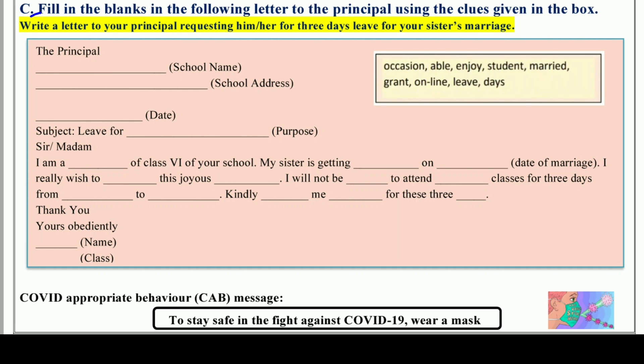We'll move on to part number C - filling the blanks in the following letter to the principal using the clues given in the box. अब आपको principal को एक letter लिखना है और यहाँ पर आपकी help के लिए clues दे रखे हैं इस box में. The title is: write a letter to your principal requesting him or her for three days leave for your sister's marriage. देखो format यही होता है, सिर्फ उसमें थोड़े बहुत particular changes हो जाते हैं.